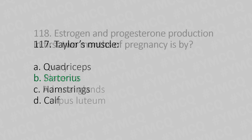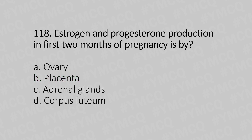Now let's move to question number 118. Estrogen and progesterone production in the first two months of pregnancy is by: Option A, ovary. Option B, placenta. Option C, adrenal gland. Option D, corpus luteum. And the answer is Option D, corpus luteum.